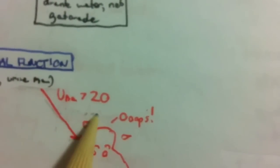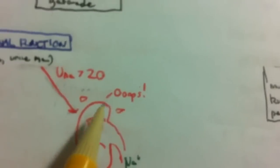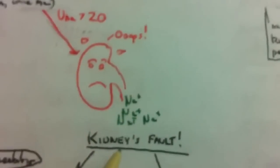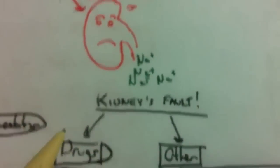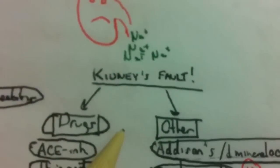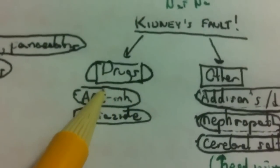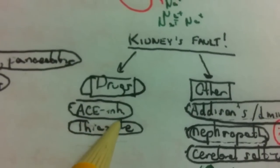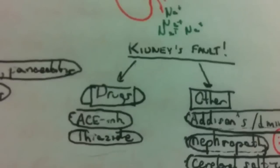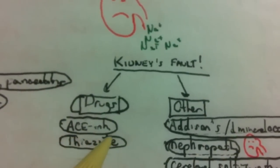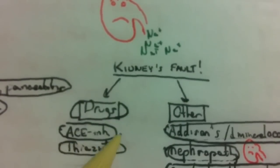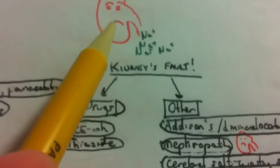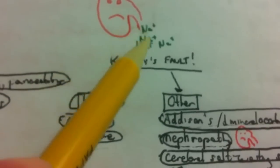If urine sodium is greater than 20, the kidney is not doing what it's supposed to do in hyponatremia — so this is the kidney's fault, at least to some extent. Don't ever forget drugs. ACE inhibitors work by decreasing angiotensin 2, which activates aldosterone, so decreased aldosterone results in decreased sodium retention in the distal tubule and loss of sodium.